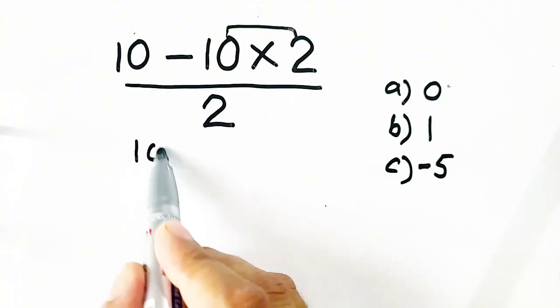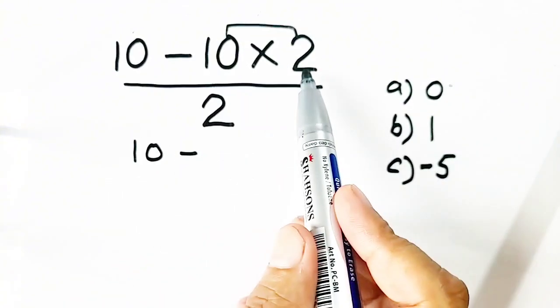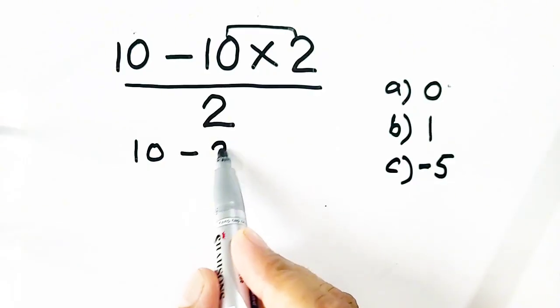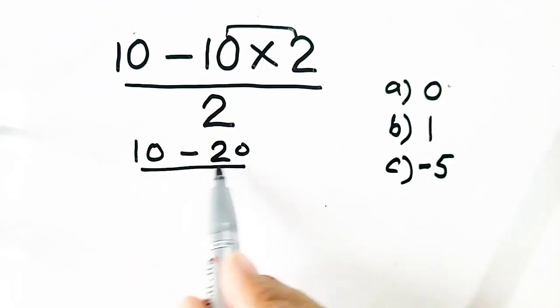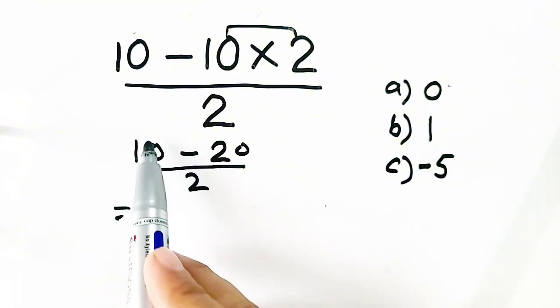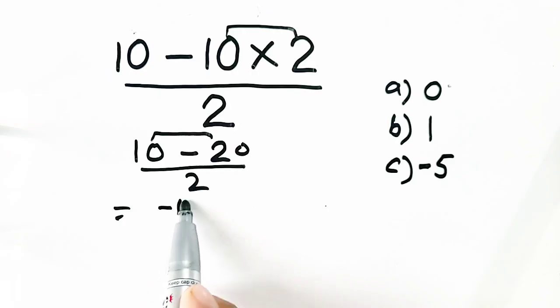So it will become 10 minus, 10 times 2 equals 20, minus 20 divided by 2. Here, 10 minus 20 equals minus 10 divided by 2.